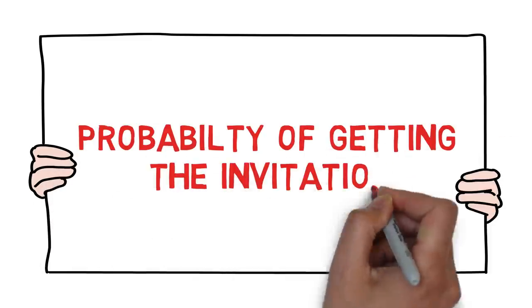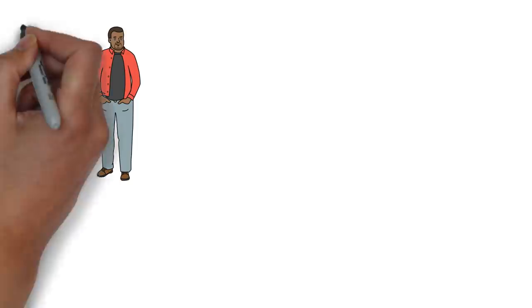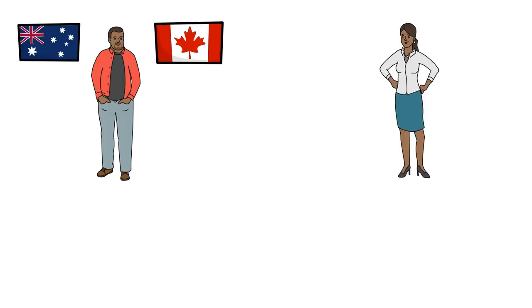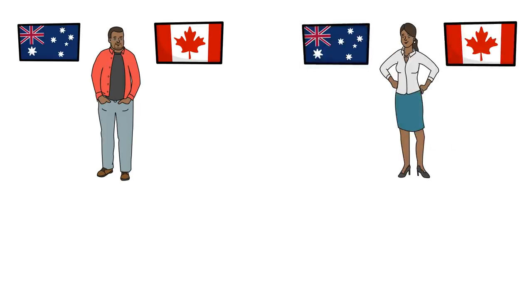The second point is the probability of getting an invitation. Even if you're eligible, you need to consider how long it will take to get the PR. For example, if you have around 65 points — the minimum eligibility for Australia — and around 460 points in the Canadian CRS system, you're eligible for both. But in Australia you may wait a year or more for an invitation, while in Canada you could get it within the next 15 days due to your high CRS score.